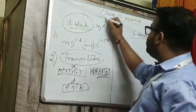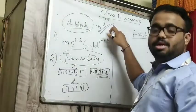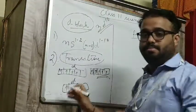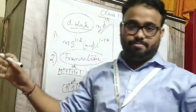Except zinc, because students, zinc is 3d10. 3d10 means all are filled up, entire d is filled up. So zinc will not be considered as transition element.